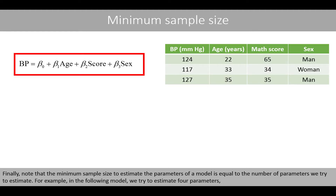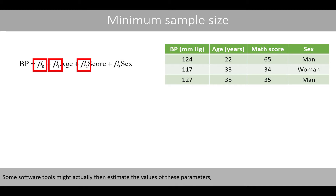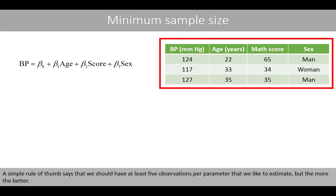Note that the minimum sample size to estimate the parameters of a model is equal to the number of parameters we try to estimate. For example, in the following model we try to estimate four parameters, which is not possible because we here only have three data points. Some software tools might actually estimate the values of these parameters and set the last parameter to N/A, which might cause confusion or errors if you then try to run an automatic stepwise selection method. A simple rule of thumb says that we should have at least five observations per parameter that we like to estimate, but the more the better.